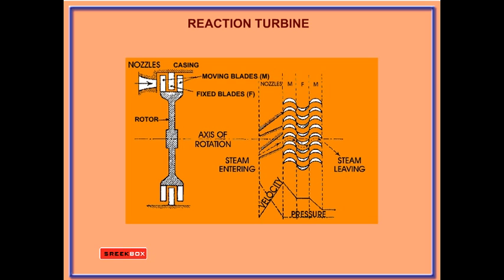Now let us consider the working of the reaction turbine. In a reaction turbine, the steam is not expanded in the nozzle but expands as it flows over the blades. The steam passes over the fixed blade, F. The fixed blade changes the direction of steam and at the same time allows it to expand to a higher velocity with a decrease of pressure. Then the steam passes over the moving blade, M, as shown in the figure.